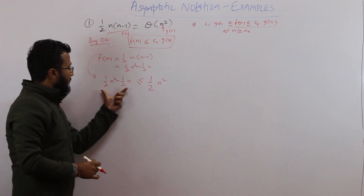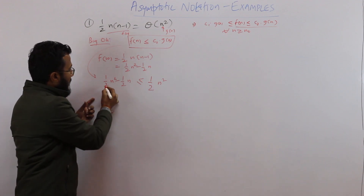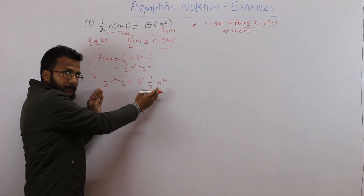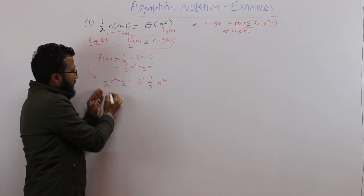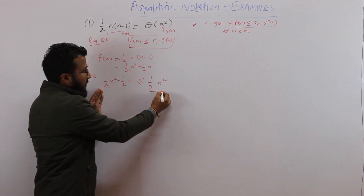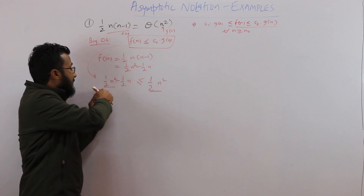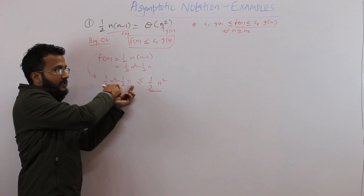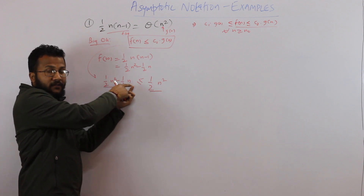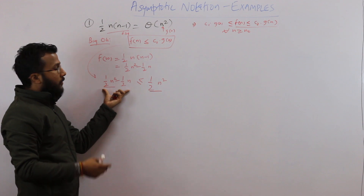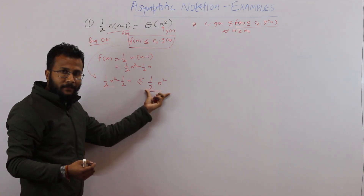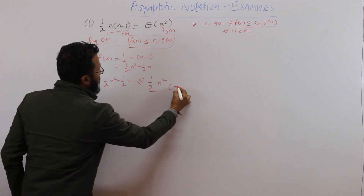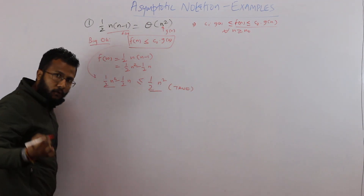If you look at this closely, on the left-hand side we have ½n², and on the right-hand side we also have ½n². But on the left-hand side I am subtracting ½n from ½n², so the left-hand side should always be less than the right-hand side. This is true. But is it true for all values of n? Let us find out.